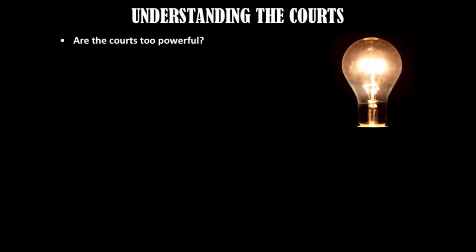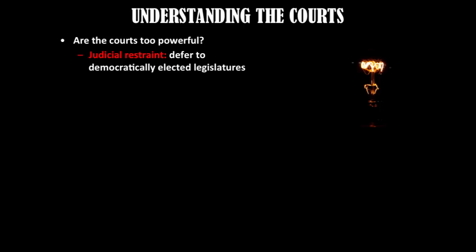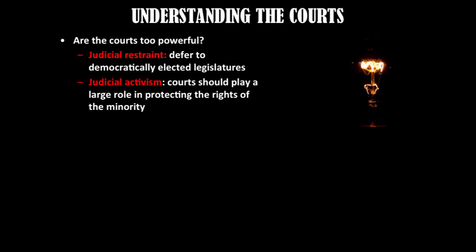On the other hand, others argue that the framers set up the court to be protected from the majority, and the Constitution takes numerous steps to protect minorities from the tyranny of the majority. It's important for the court to be insulated from majority opinion so that they can interpret the law fairly. This debate is illustrated best by two key terms: judicial restraint — the idea that courts should defer to democratically elected legislatures, uphold laws, and adhere to precedent rather than deliver precedent-setting opinions on big issues like healthcare or abortion — and judicial activism, the belief that the court should play a large role in protecting the rights of the minority, even if decisions aren't perfectly aligned with public opinion.